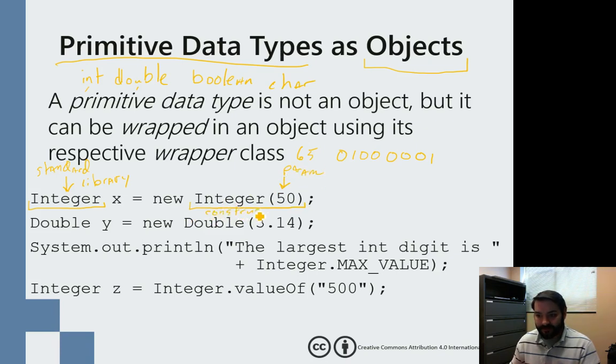And again, we have this for every single one of our primitive data types. You can see I have, again, with my double.